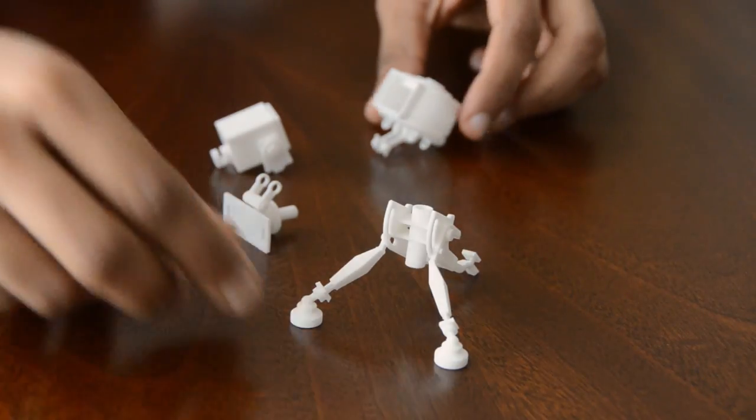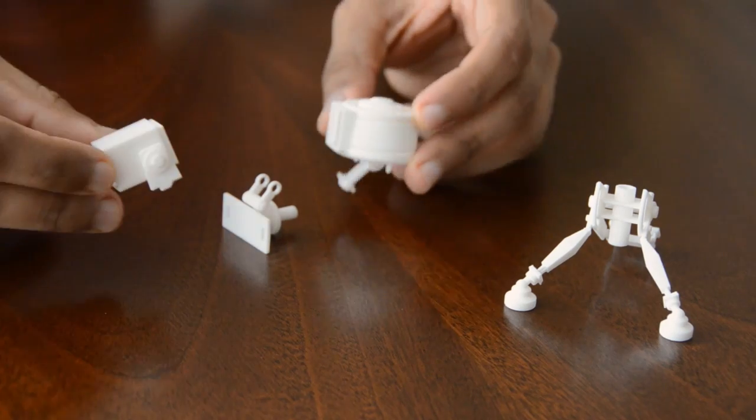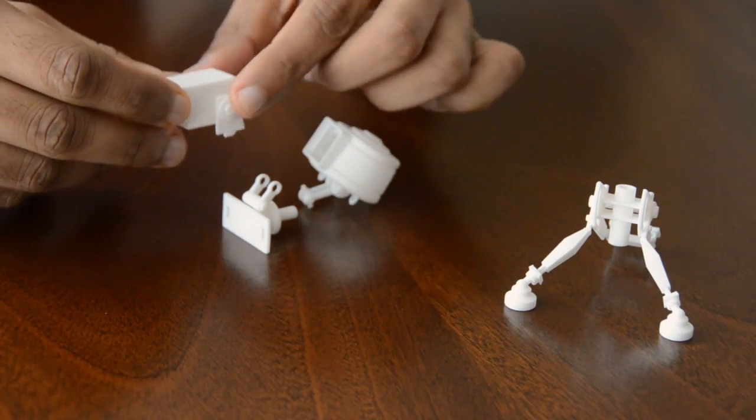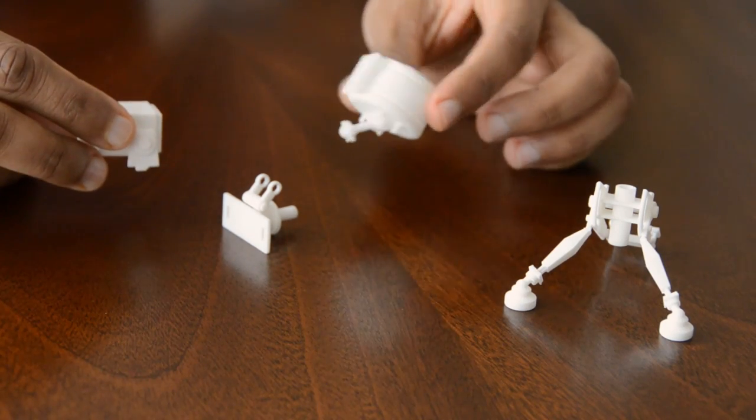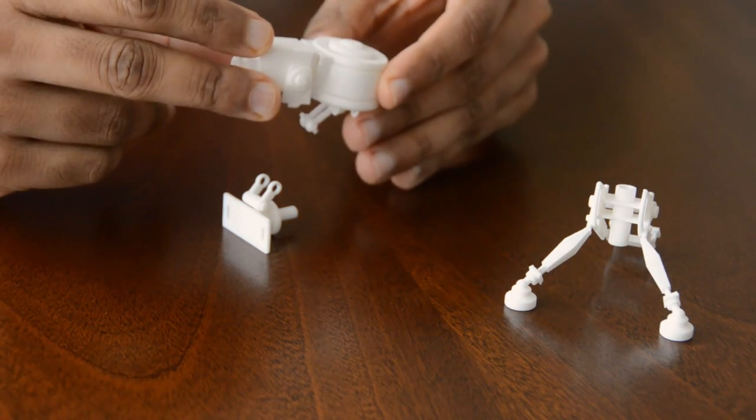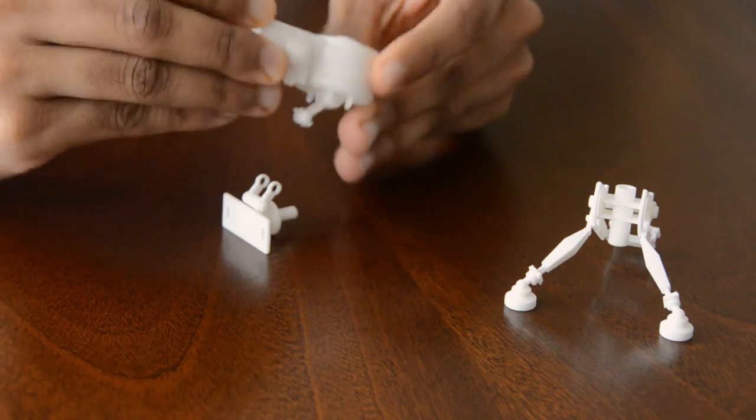As with any SLS print, once you've confirmed you have all the pieces, I recommend you give the pieces a good clean. Shapeways cleans the pieces before sending them to you, but there can still be trapped powder on or within the part. This can cause some problems when painting or even when you glue the pieces together.